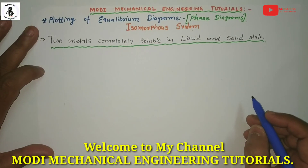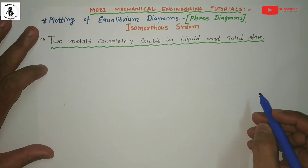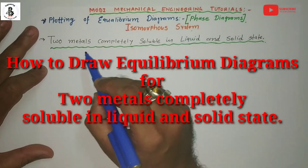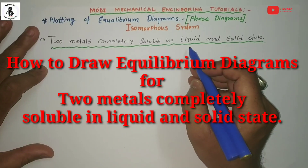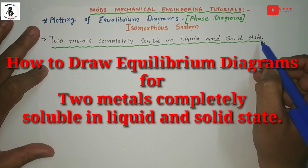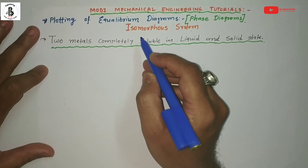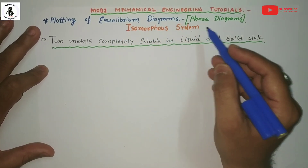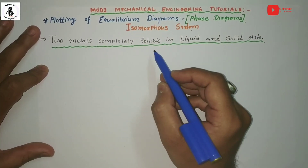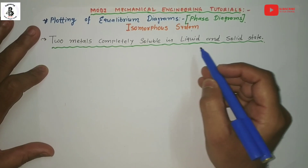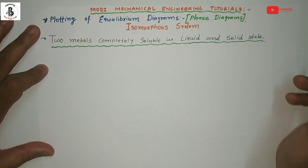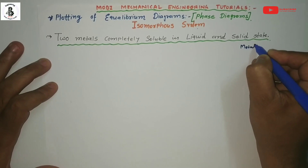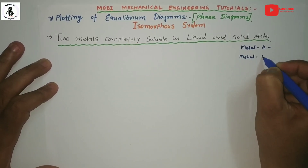Welcome to my YouTube channel Modi Mechanical Engineering Tutorials. In this video I would like to draw an equilibrium diagram for two metals which will be completely soluble in both liquid and solid state. This will be known as an isomorphous system. Let us start with the plotting of equilibrium diagrams, or phase diagrams, for two metals having complete solubility in both liquid and solid state.